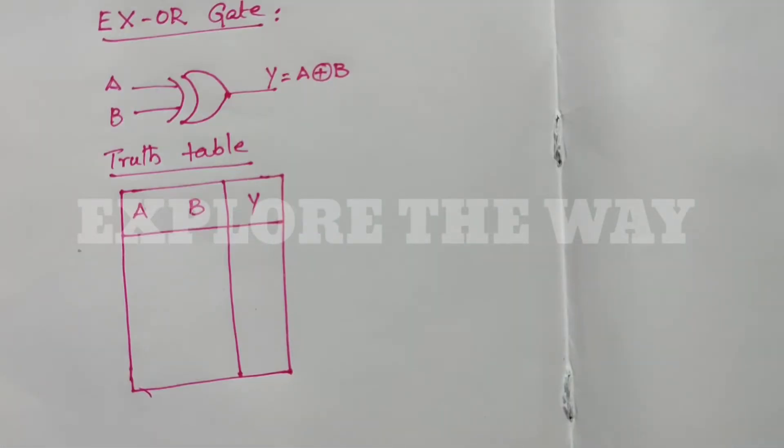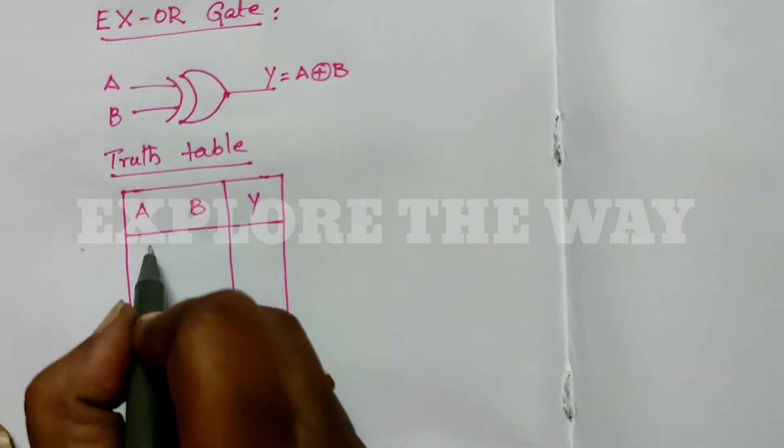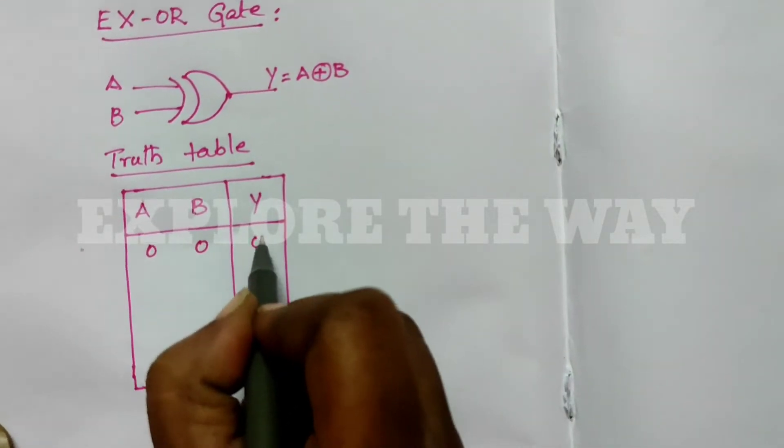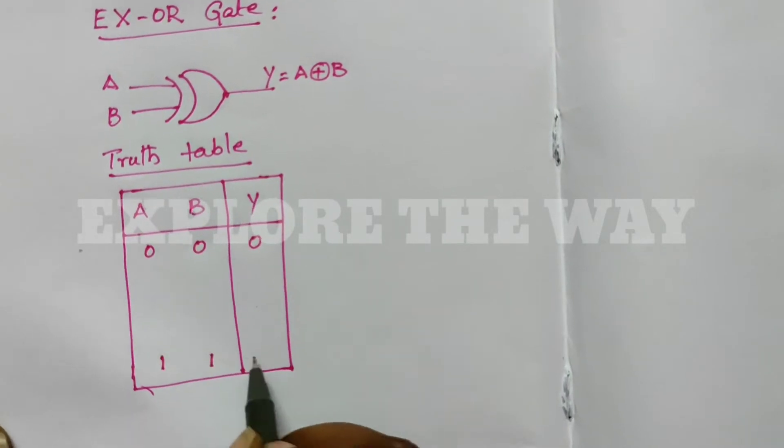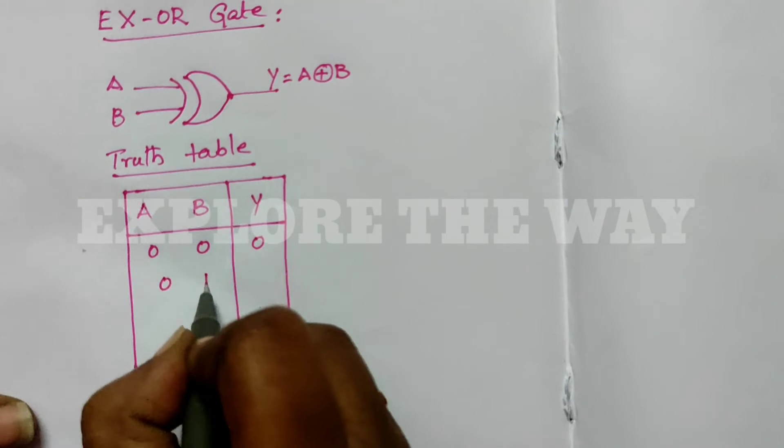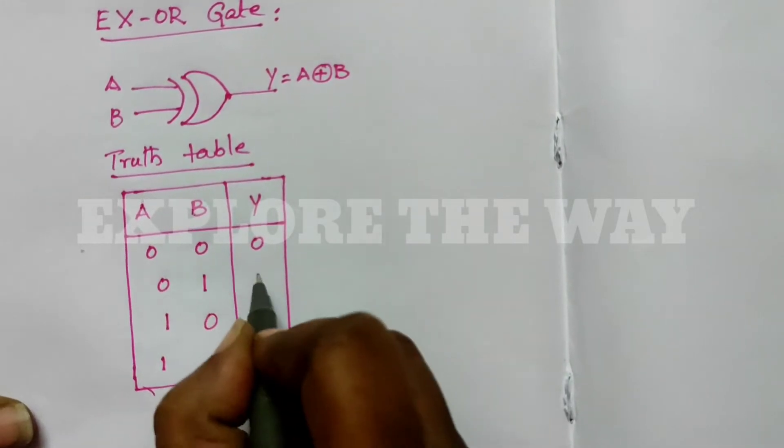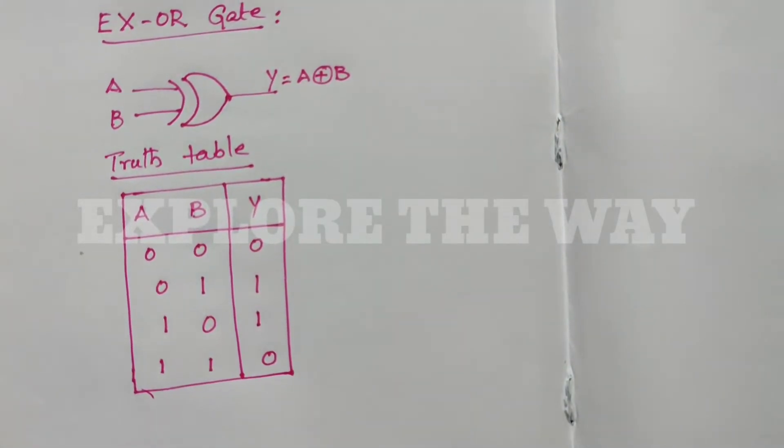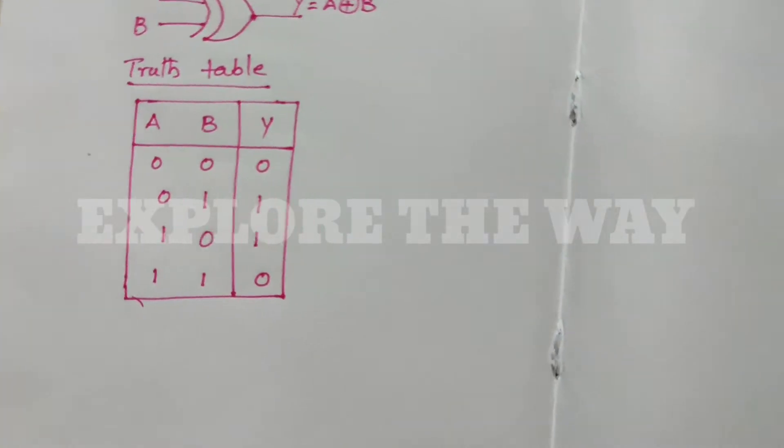The XOR gate produces output 0 when the inputs are the same, and produces output 1 when the inputs are different. This is the functionality of an XOR gate.